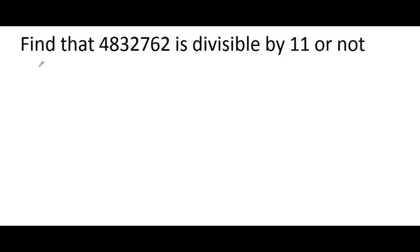So, let's see. The easy method, whether this digit is divisible by 11 or not, is sum of the odd places minus sum of the even places must be 0.